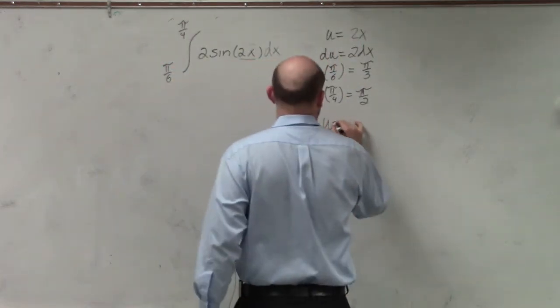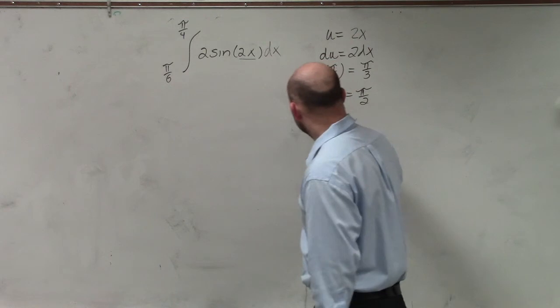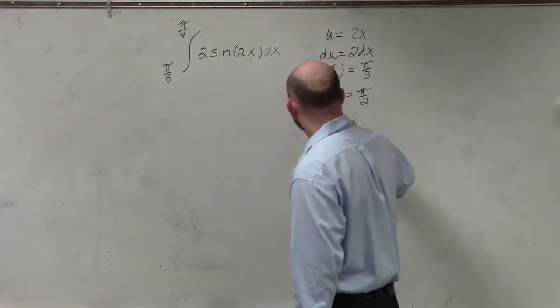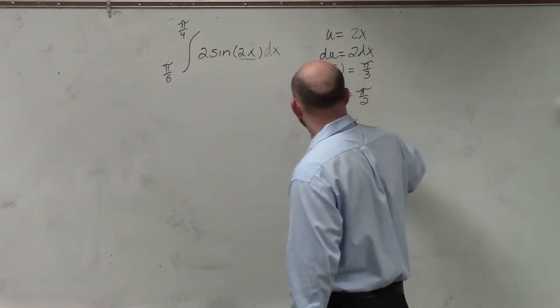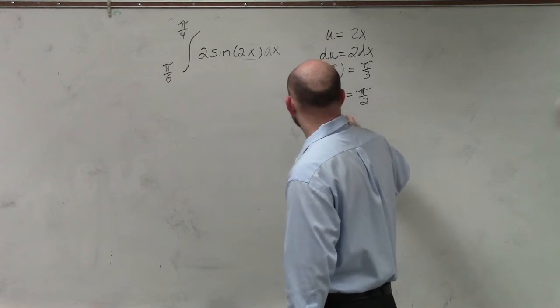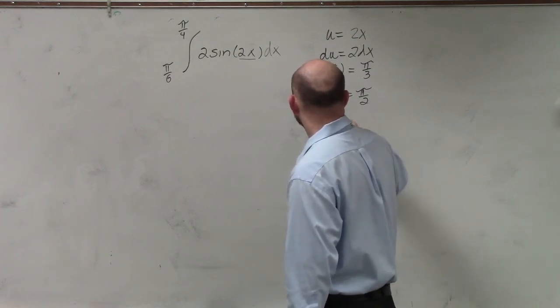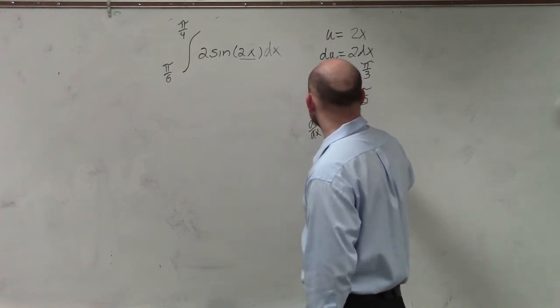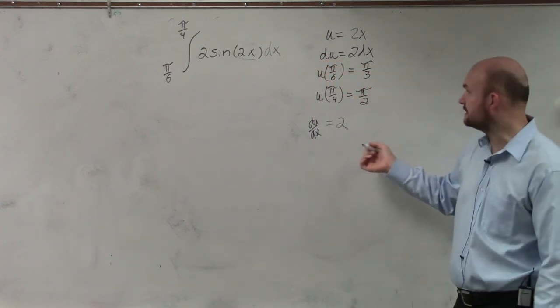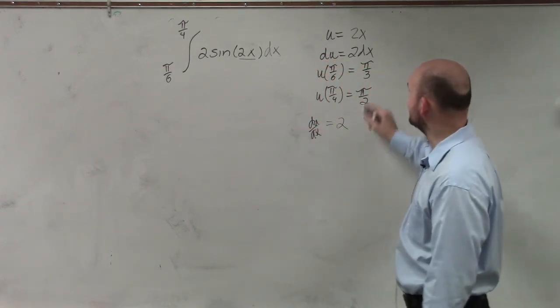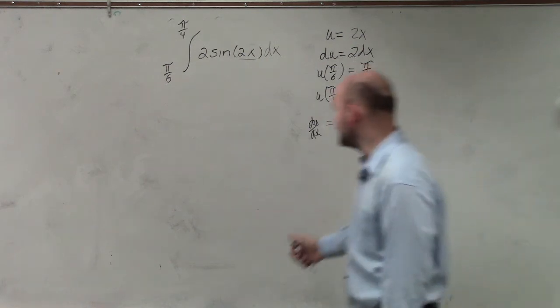So again, if u equals 2x, if you do du/dx of our 2x, du of 2x is then going to equal 2, right? If you take the derivative, and then multiply by dx on both sides, that's right. We've got the 2 times dx.